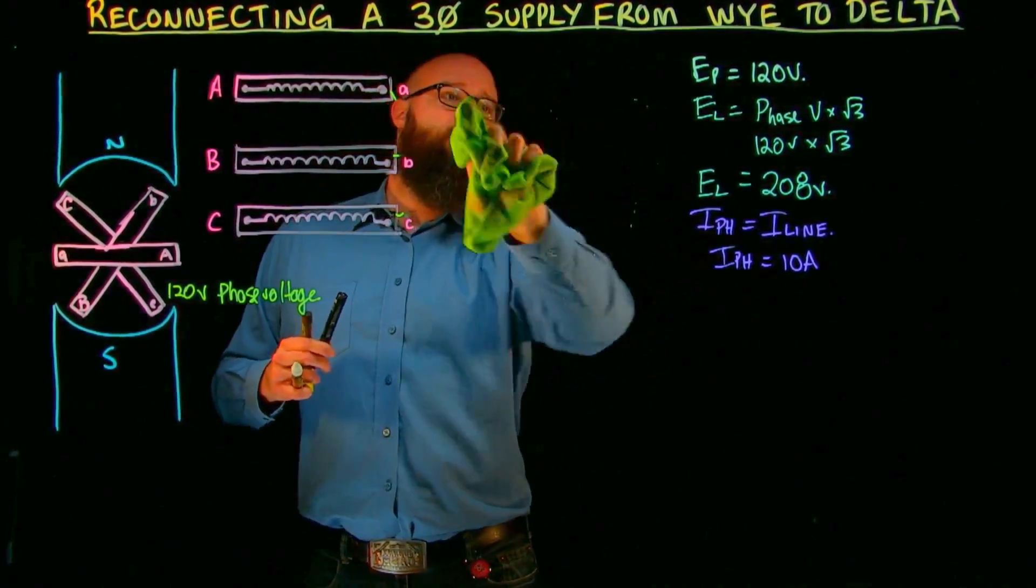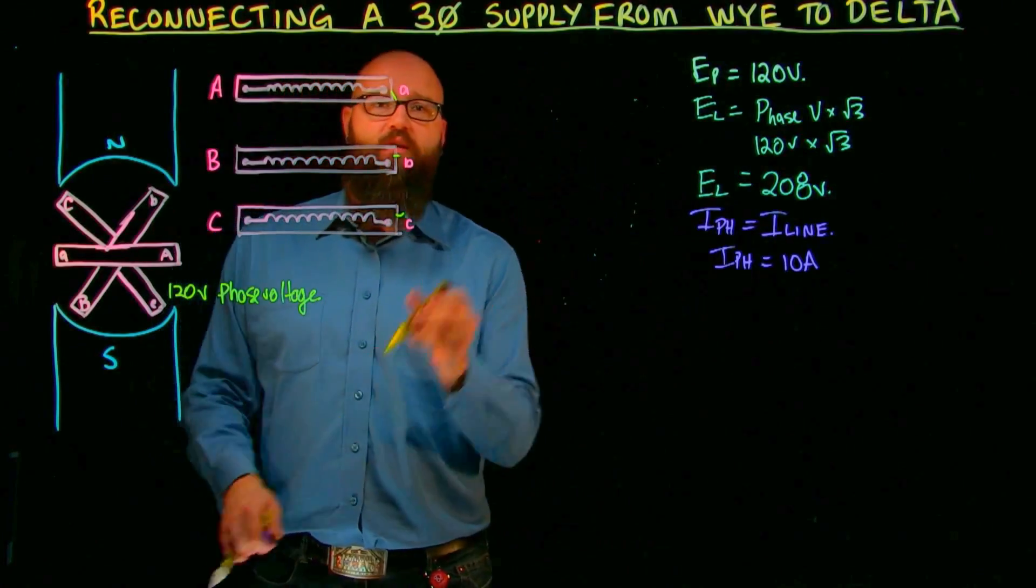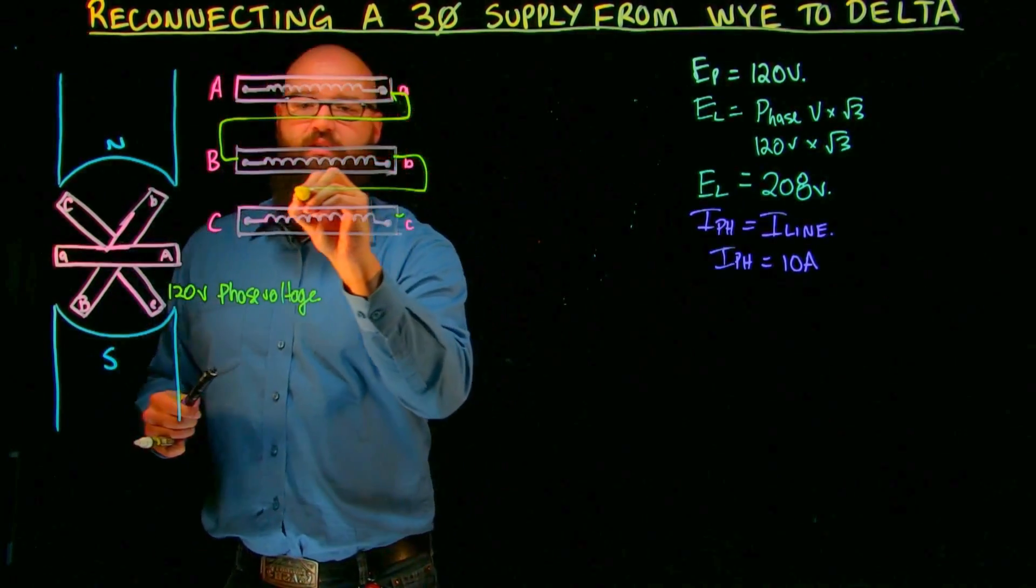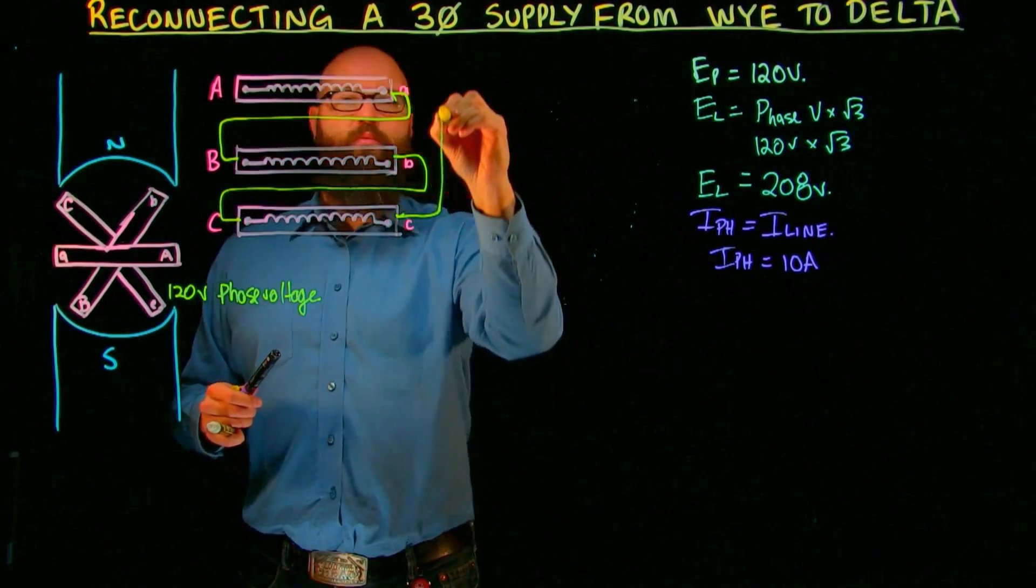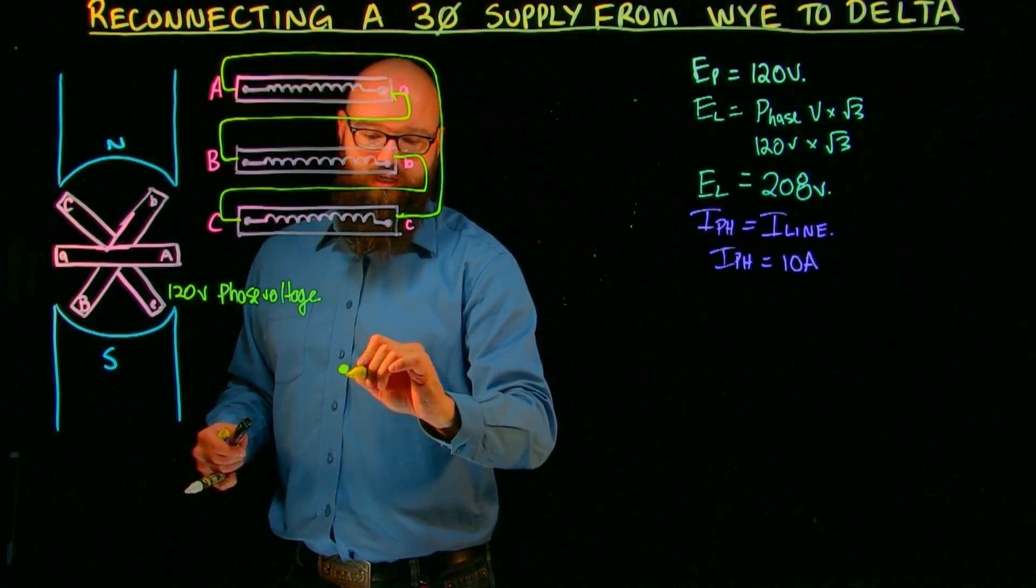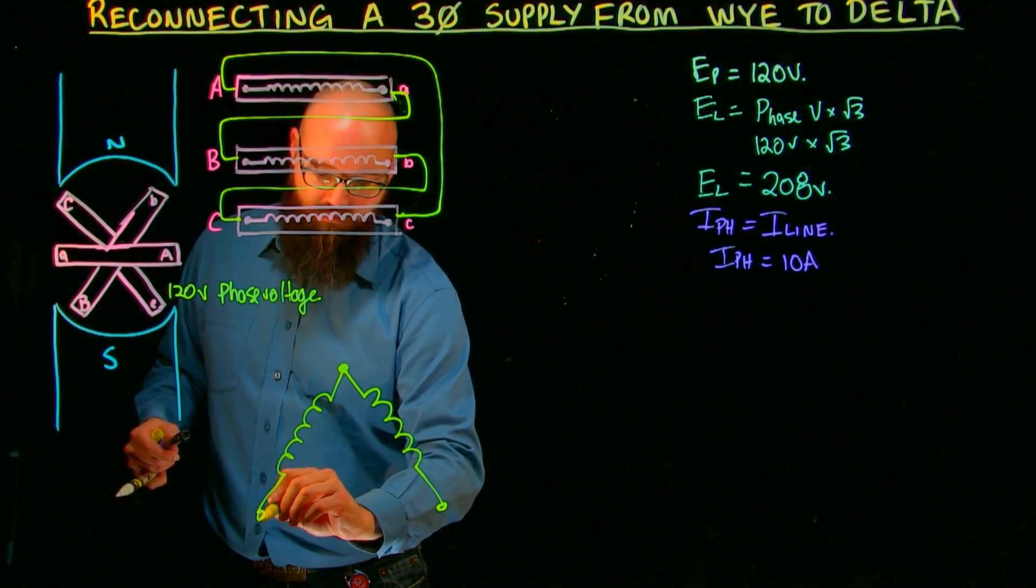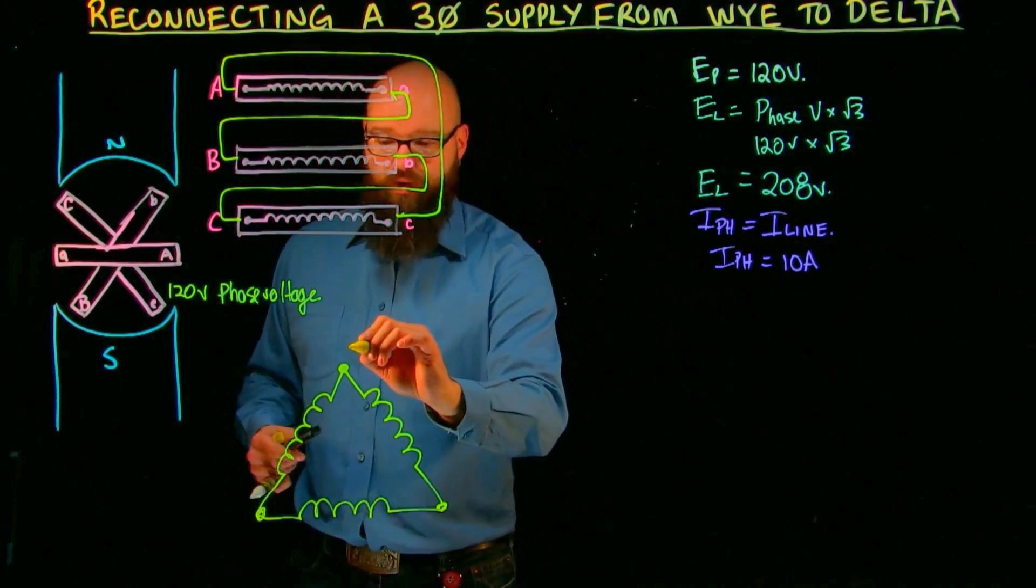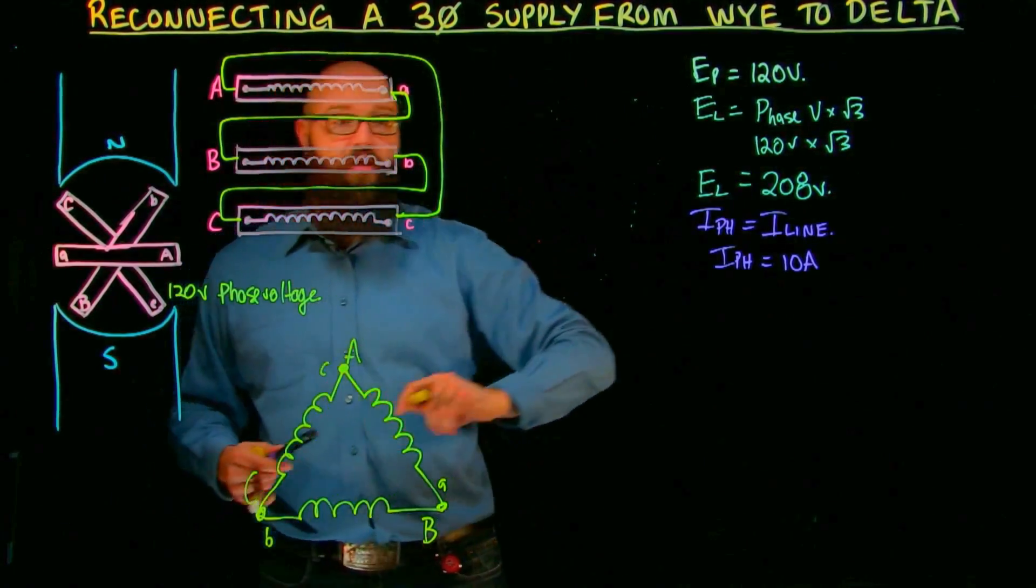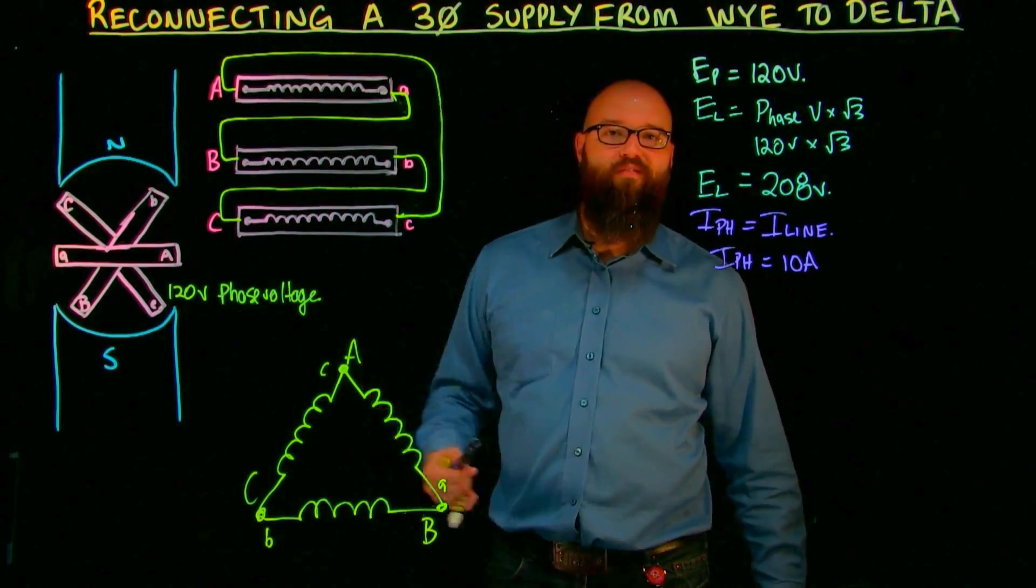So instead of connecting one common end, we're going to do this this time, we're going to take our one end here, connect it here. We're going to take this, connect it here. We'll bring this one all the way back around and connect it in there. And we can still see we have A, A, B, B, C, C. We've taken our three coils in our generator or our supply, and we've reconnected them in a delta configuration.